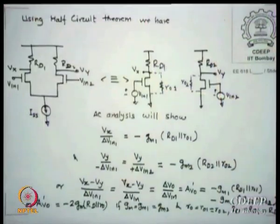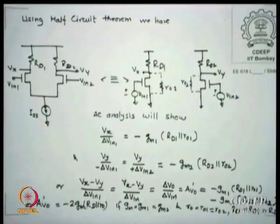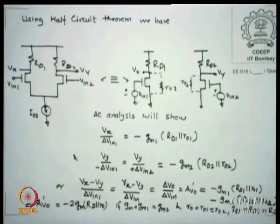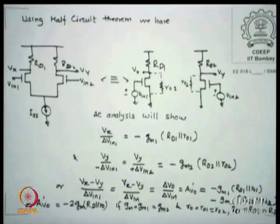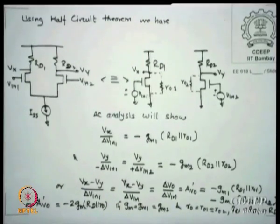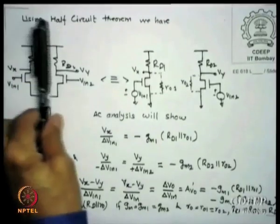We have covered the half-circuit method for solving a diffam. The condition is that the system should be symmetric across some vertical line, and then the left side and right side can be independently handled. We showed a theorem from Razavi's book using this method, with symmetry across the circuit.